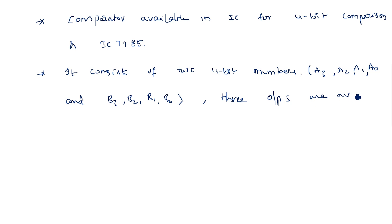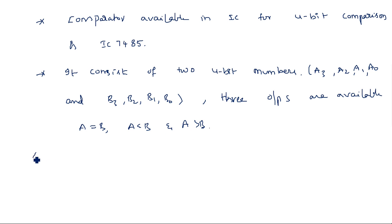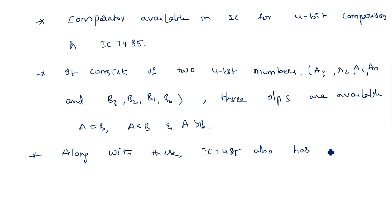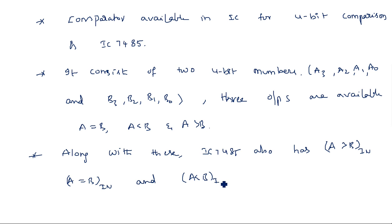The three outputs are A greater than B, A less than B, and A equal to B. Along with these inputs and outputs, IC 7485 also has cascading inputs: A greater than B in, A equal to B in, and A less than B in — these come from the outputs of a previous stage IC.